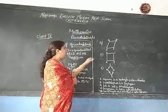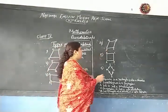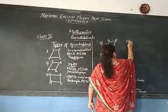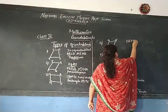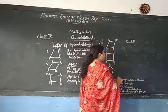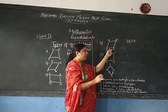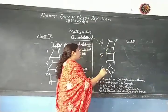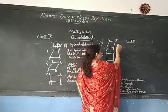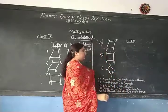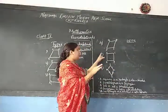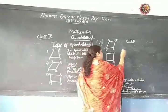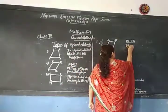Now, the fourth figure is the quadrilateral DEFG. This is also called a parallelogram, but here all the sides are equal — not just opposite sides. All the sides are equal here. So this is called as the rhombus.